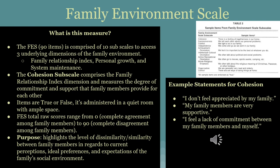Within the measurement, we have the Cohesion subscale, which basically looks into the support that each family member feels they provide for one another. The items found within the scale are true or false and it is usually administered in a quiet room with ample space. The FES's total raw scores range from zero, which is complete agreement among family members, to 90, which is complete disagreement. The purpose of this scale is to highlight the level of dissimilarity and similarity between family members as it regards their current perception, ideal preferences, and expectations of the family's social environment. On the right side of the PowerPoint presentation, we have some example statements for cohesion.